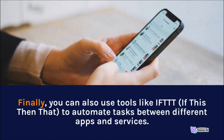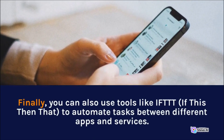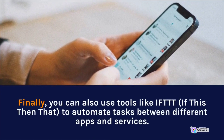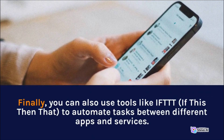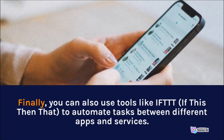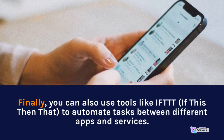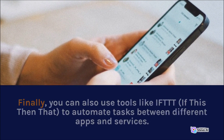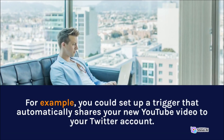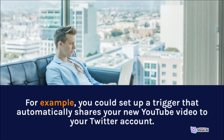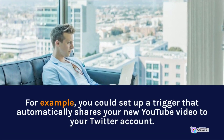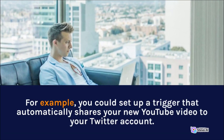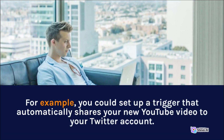Finally, you can also use tools like IFTTT — If This Then That — to automate tasks between different apps and services. For example, you could set up a trigger that automatically shares your new YouTube video to your Twitter account.